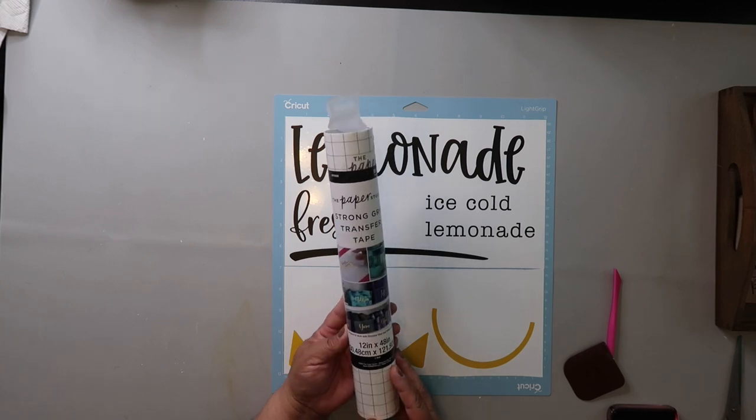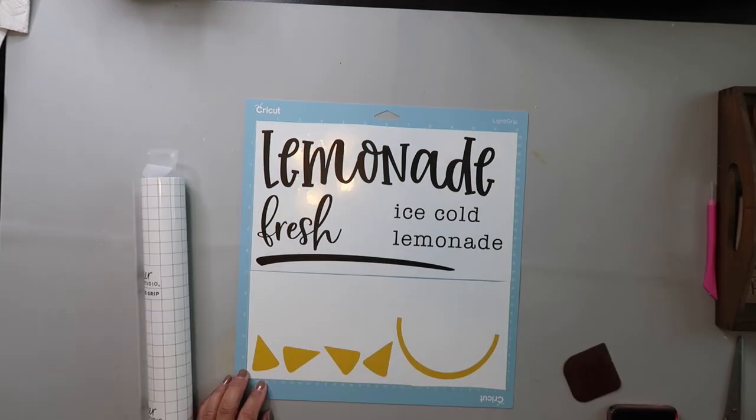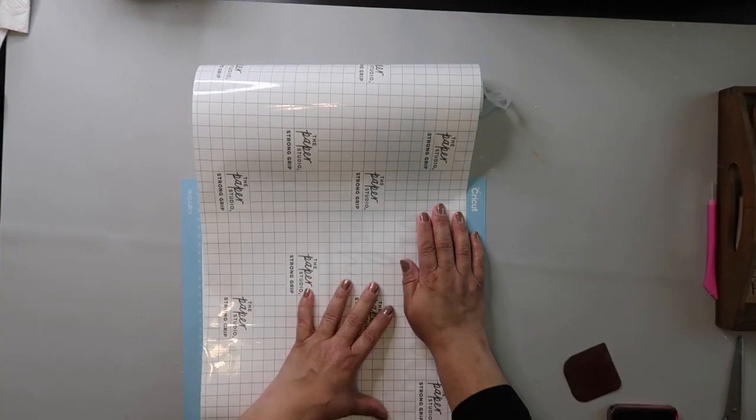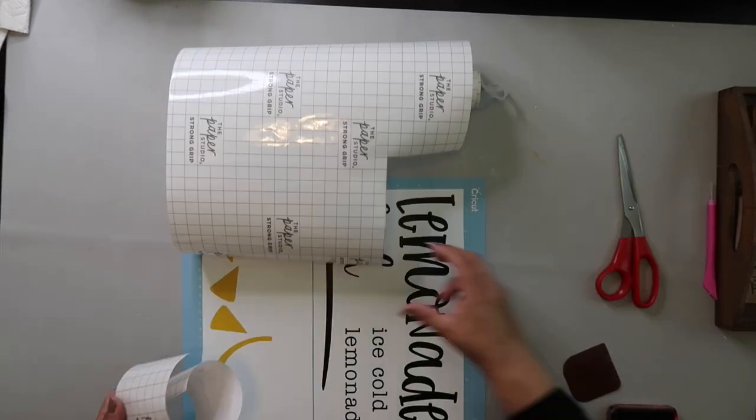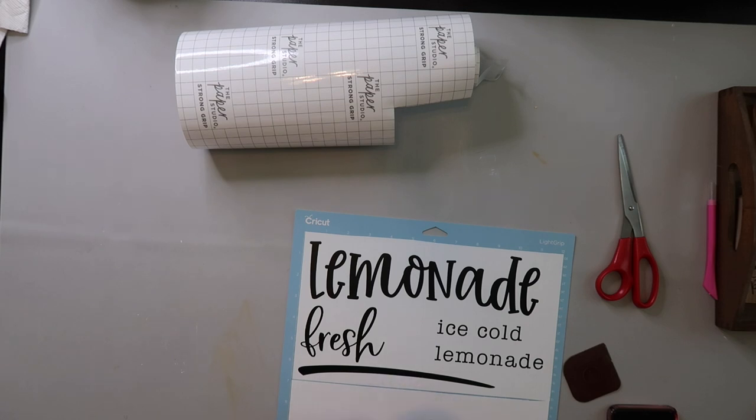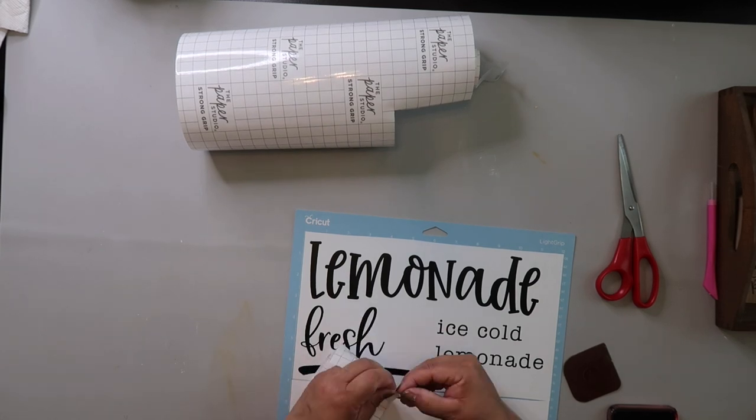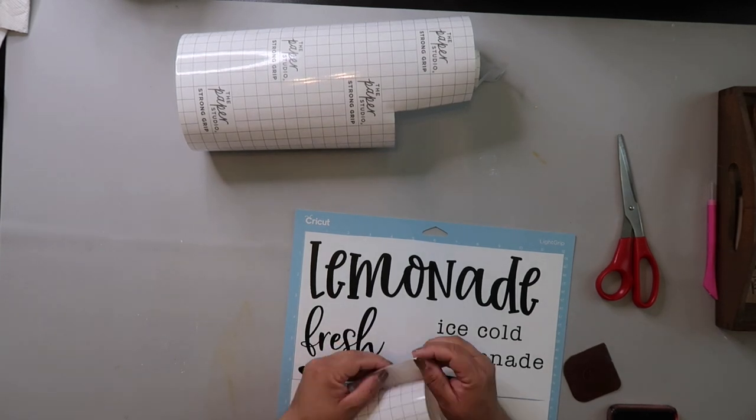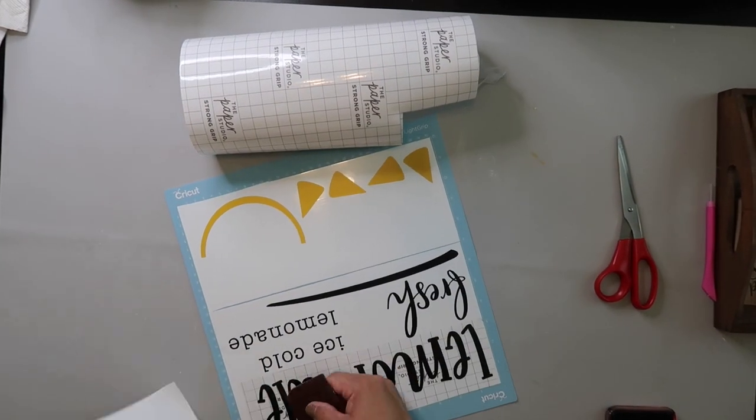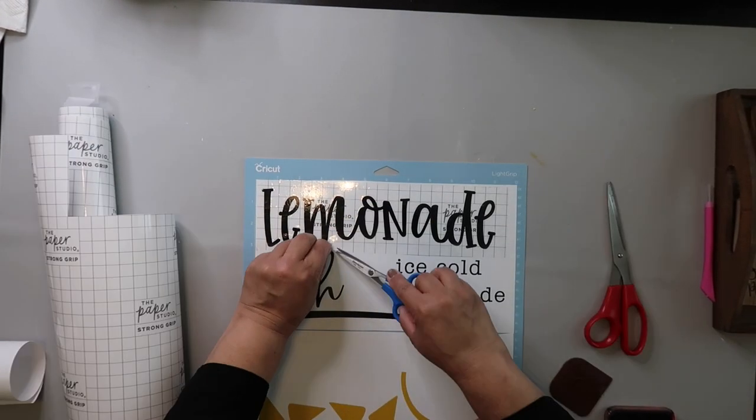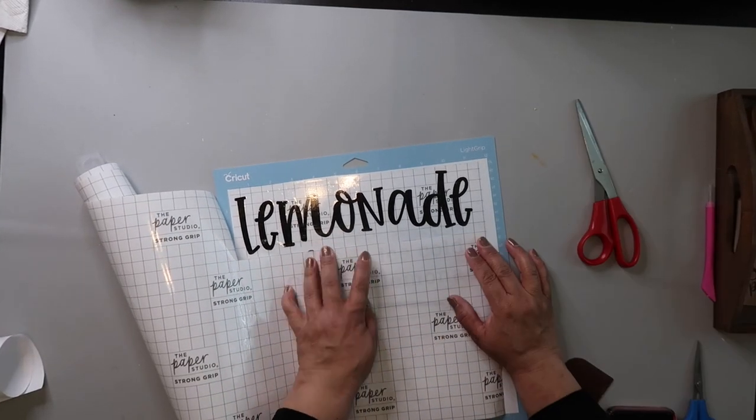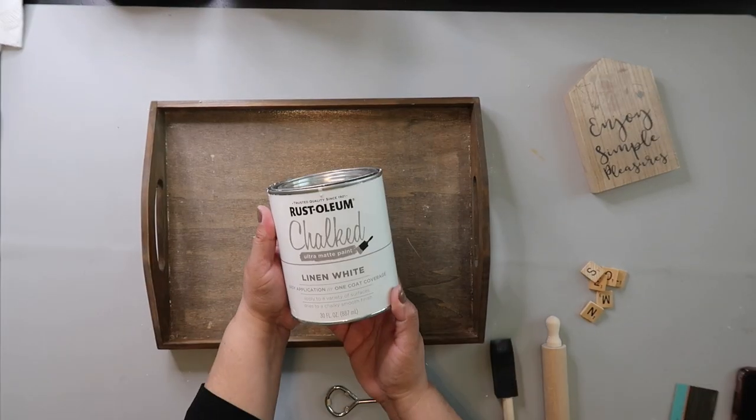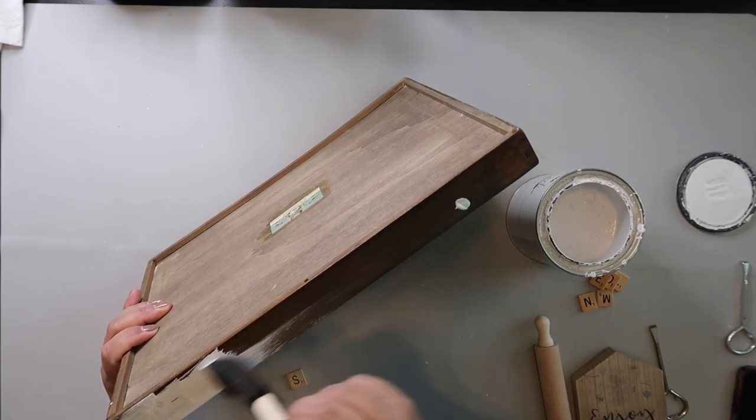I'm trying to save on the transfer tape, and so you'll see me kind of, instead of just using the whole transfer tape and just covering the whole thing, trying to cut it out, trying to save it, and not waste it as much, but really, it would have saved me more time and energy if I just used the whole sheet. Anyway, so I'm cutting it out, and trying to get ready to adhere it to the tray. But first, I got to paint it with the Rust-Oleum Chalk Ultra Matte Paint in the color Linen White.